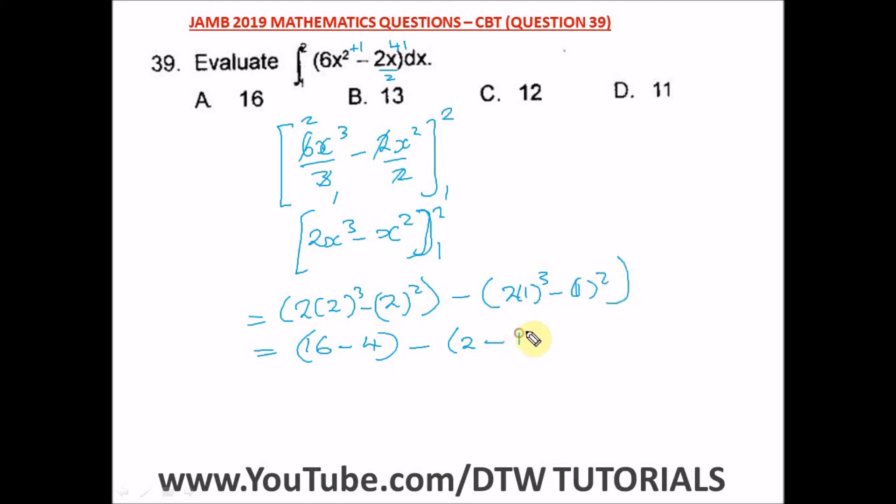From here, what is 16 minus 4? That gives us 12. What is 2 minus 1? That gives us 1. And what is 12 minus 1? 12 minus 1 gives us 11.